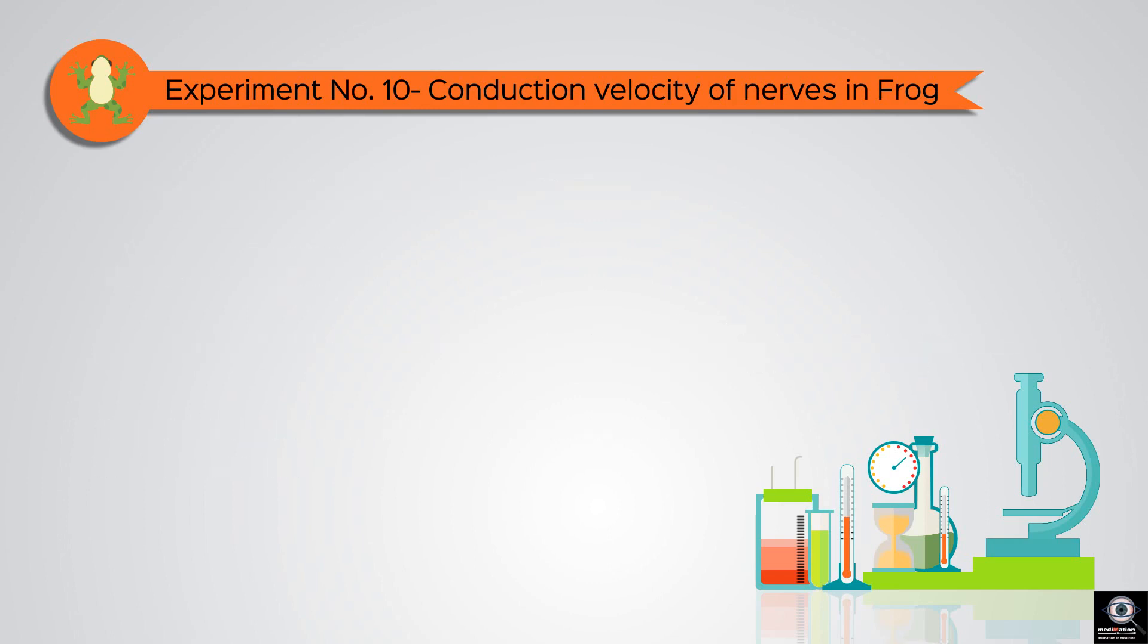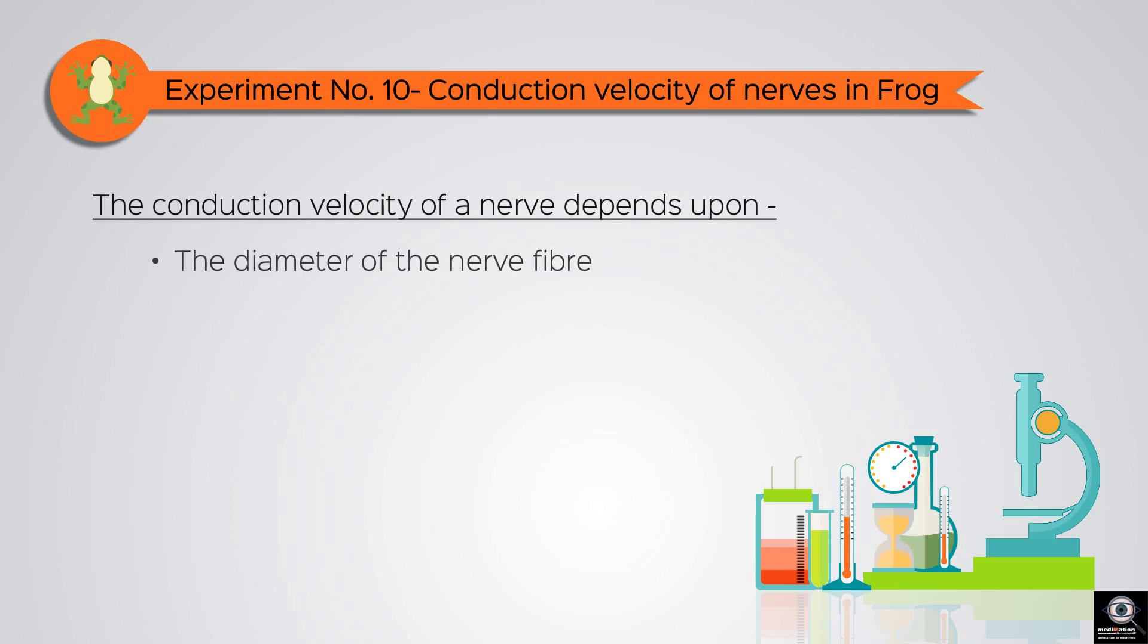The conduction velocity of a nerve depends upon two factors: the diameter of the nerve fiber and the myelination of the nerve.